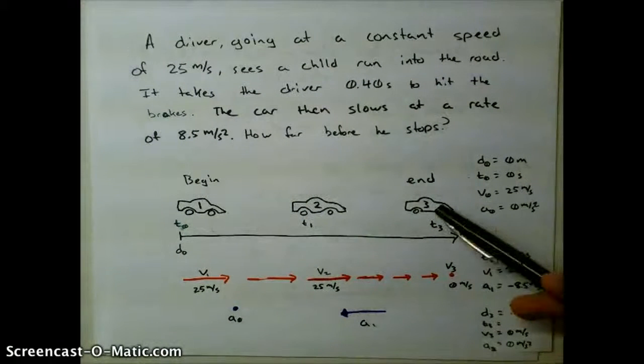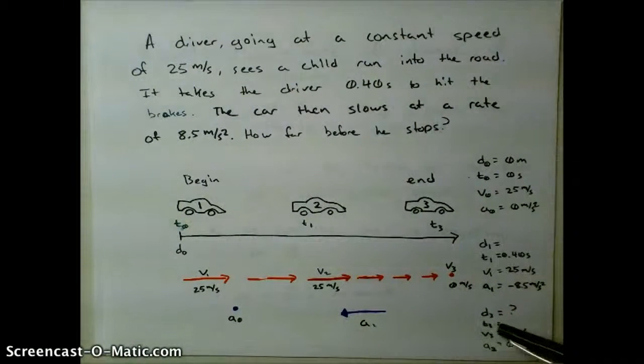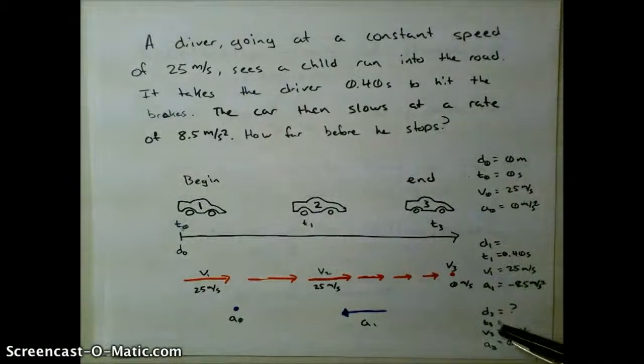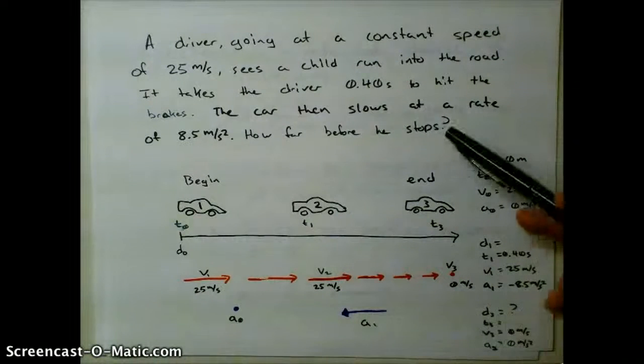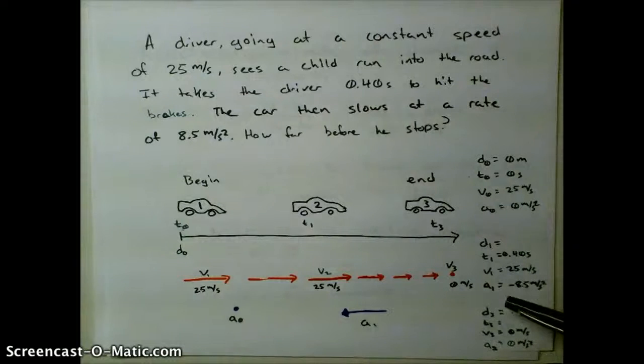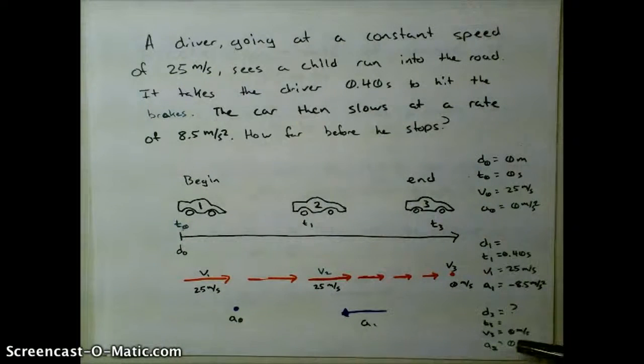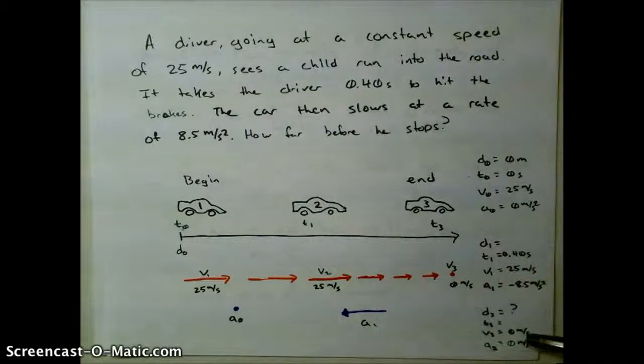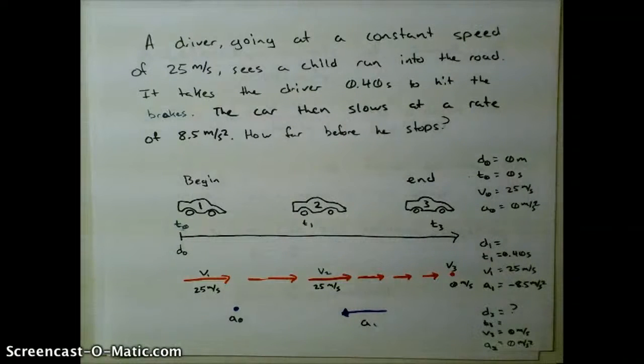At time three here, we don't know the exact time that it would be. And the question asked us for the distance. We don't know those first two values. But we know if the car is going to come to a rest and stop so it doesn't hit the child, that its velocity is going to be zero meters per second. And its acceleration will end up being zero meters per second squared because once it's stopped, it will no longer be moving.